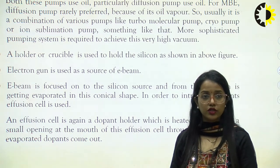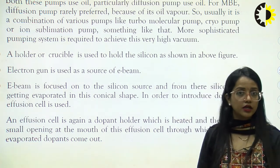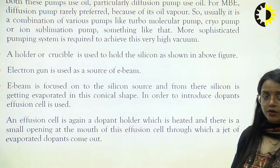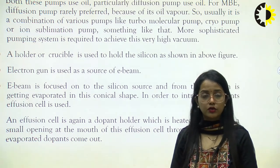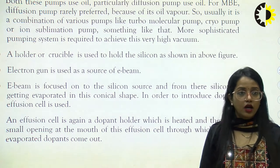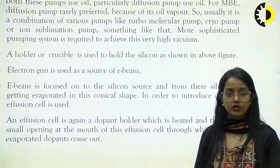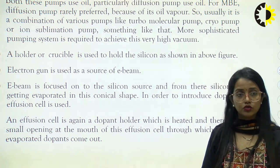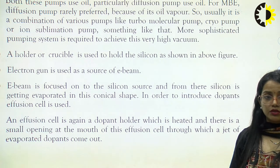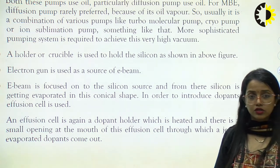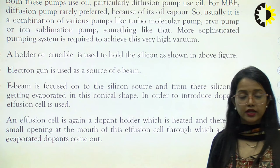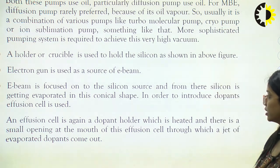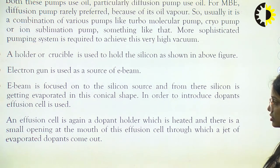For molecular beam epitaxy, diffusion pumps are rarely preferred because of their oil vapour. Usually it is a combination of various pumps like a turbo molecular pump, cryo pump, or ion sublimation pump — more sophisticated pumping systems are required to achieve this high vacuum. A holder or crucible is used to hold the silicon, and an electron gun is used as a source of the electron beam. The electron beam is focused onto the silicon source and the silicon is evaporated in a conical shape.